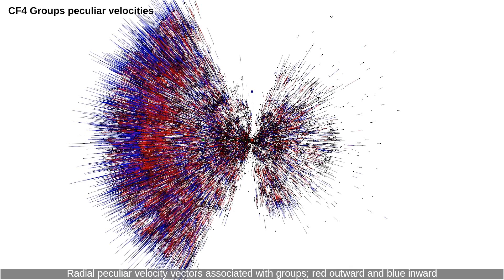Radial peculiar velocity vectors associated with groups. Red outward and blue inward.